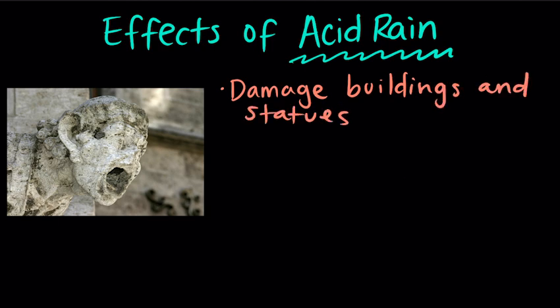Here in this photo is a gargoyle from the Munich Town Hall, which is almost unrecognizable because of all of the damage it's sustained from acid rain. There's also been a lot of studies over the years looking at the U.S. Capitol and a lot of the surfaces there that are made of marble and how they can strengthen them to protect them from acid rain before it's too late.